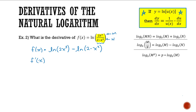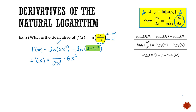Now for the derivative. For ln(2x³): using our chain rule formula, it's (1/u) · (du/dx), where u = 2x³. So this gives 1/(2x³) times the derivative of 2x³, which is 6x², giving 6x²/(2x³). For ln(2 − x²): u = 2 − x², so the derivative is 1/(2 − x²) times du/dx.